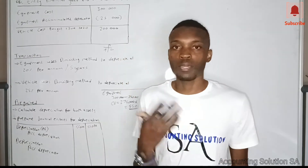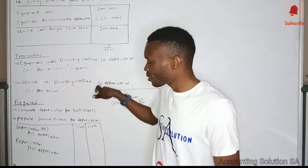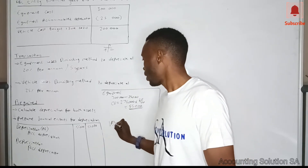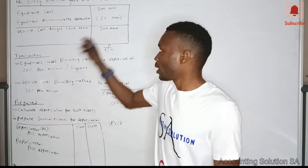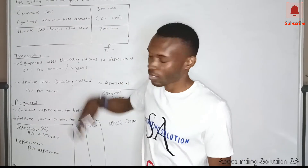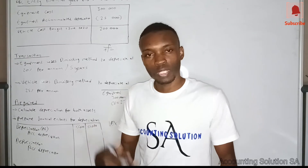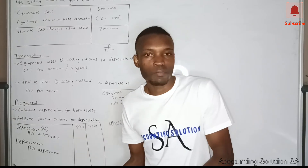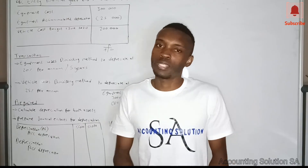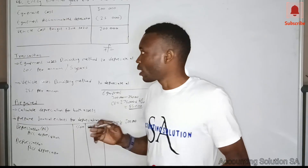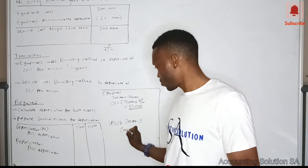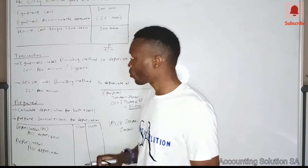Now for the vehicle: it uses the diminishing balance method at 25%. The vehicle was bought in the current year at a cost price of 200,000. You might ask why there is no accumulated depreciation for this vehicle. Remember, if we buy something new, on the day we bought it, it has no accumulated depreciation yet — depreciation is a loss of value and it hasn't lost any value yet. So accumulated depreciation is zero, meaning our carrying value is still 200,000.